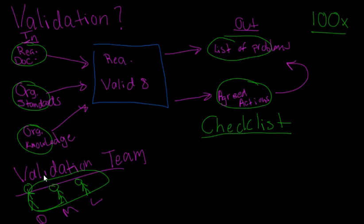So our validation team is going to work on this requirement validation, spit out our list of problems and spit out our agreed actions, and these list of problems have to abide by this checklist and the first one is understandability.